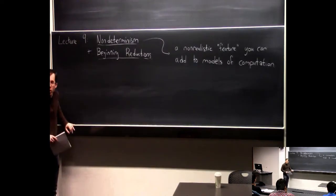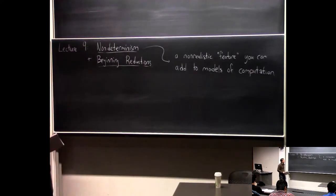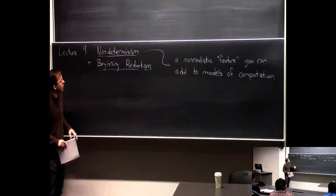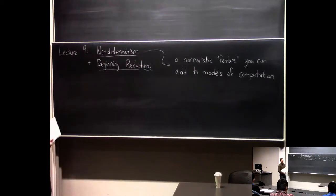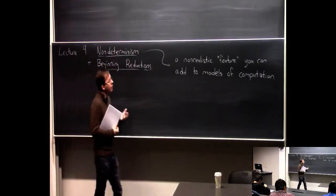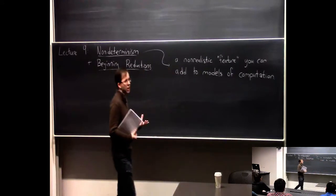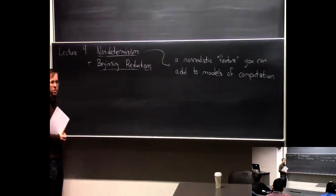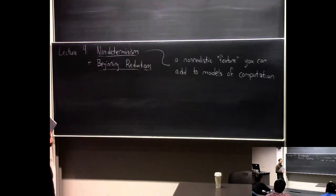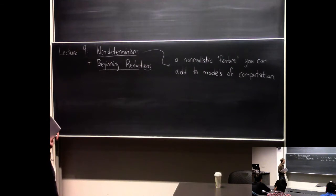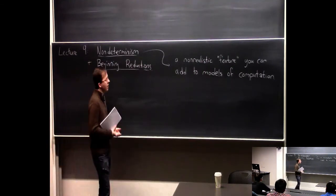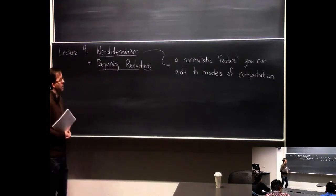You may have seen non-determinism before in the context of DFAs in 251 — there's a version of non-deterministic DFAs. You can also add this concept of non-determinism to Turing machines or to any algorithm. Non-determinism is a feature you can add to your model of computation to make it potentially more powerful in terms of efficiency. I want to emphasize that it's not a realistic feature — it's not considered a reasonable model of computation.